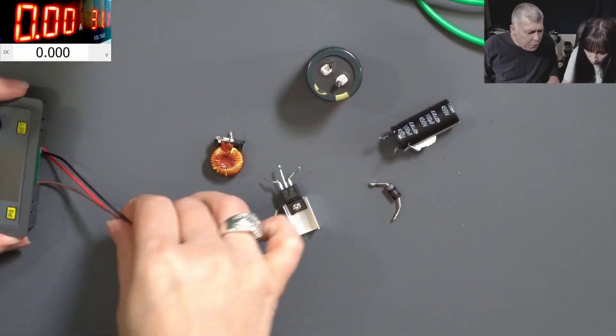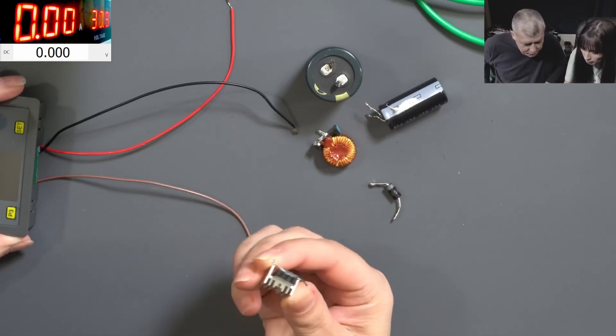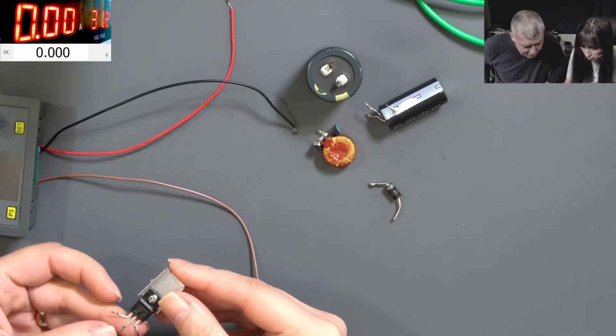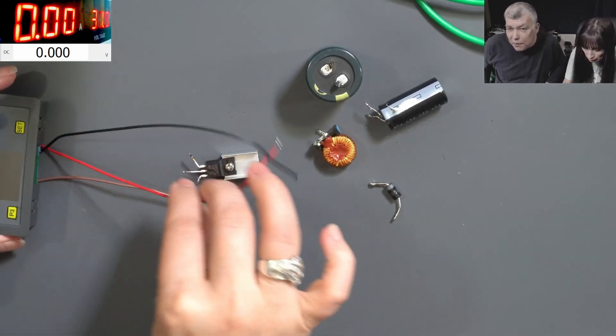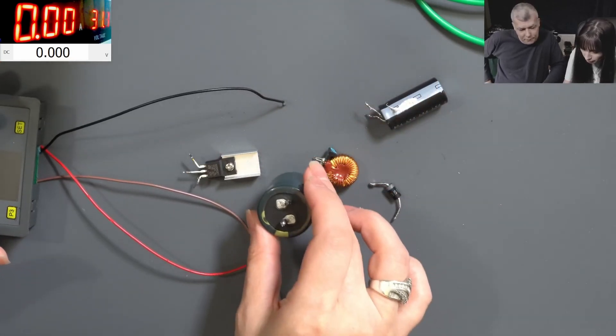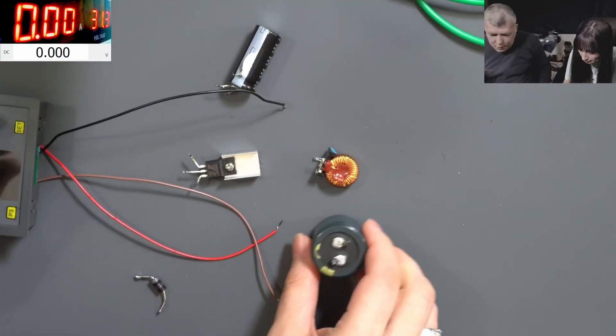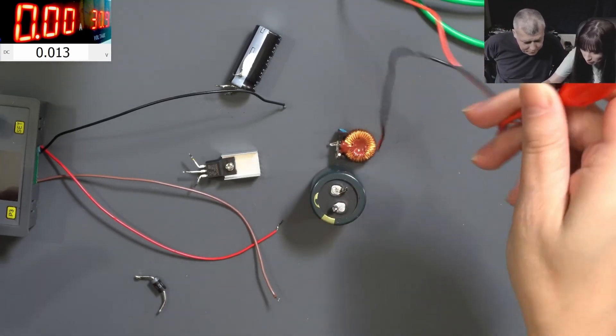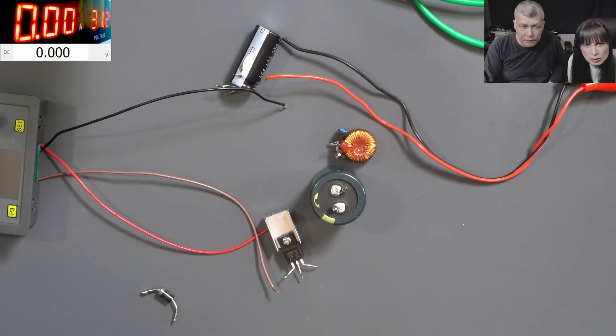Do we need anything more? No, that's all. Let's do it. Right, so we have it here. We are not wasting time. I don't know which one was the gate, the source, and the drain. You can check the data sheet on the internet. Plus and minus wires here and plus and minus here.